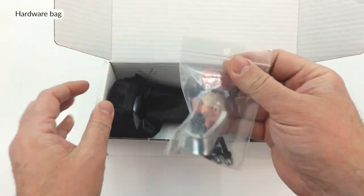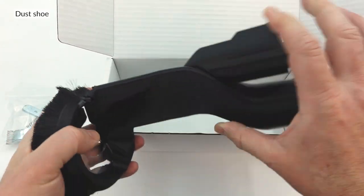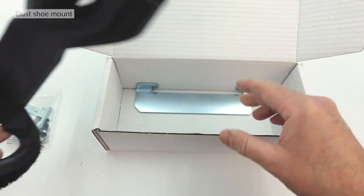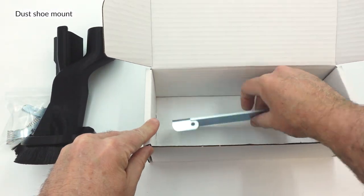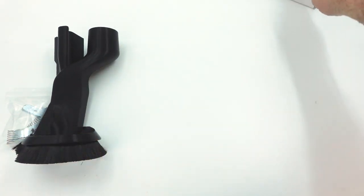In the kit you'll find the hardware bag, the dust shoe with pre-installed magnets, and the dust shoe mount. Set aside the box and the mount and open the hardware bag.